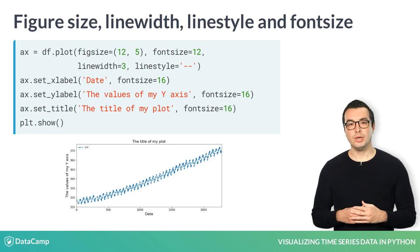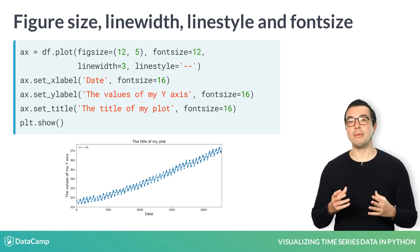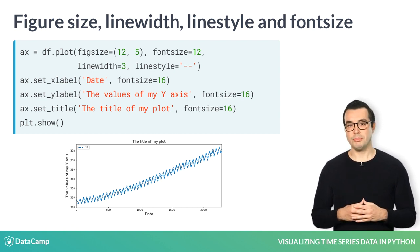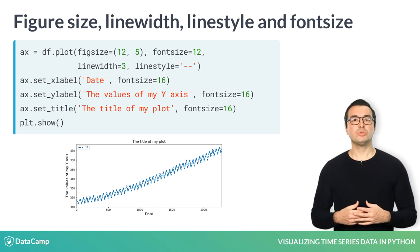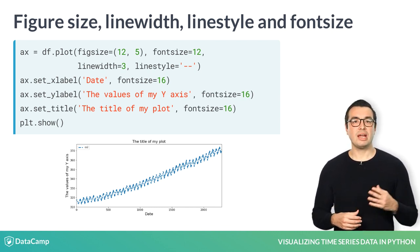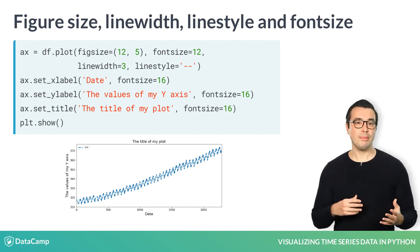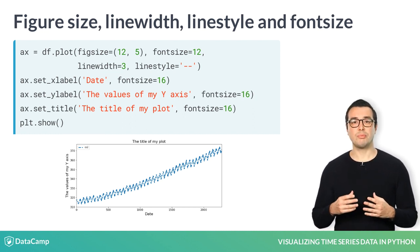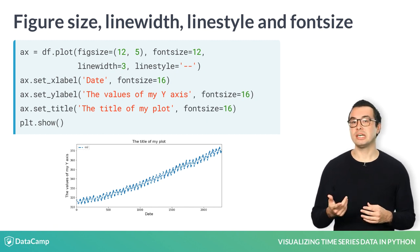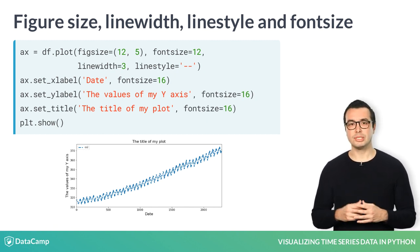In addition to labels, you can also tweak several other parameters. For example, the figsize argument can be used to specify the length and height of your figure, which can be helpful for presentations or when you want to share your graphs with others. The line used to display the time series data can be modified using the linewidth and linestyle arguments, which modify the width and style of the lines representing your time series data. Finally, you can also use the fontsize parameter to specify the font size of axis ticks, labels, and titles.